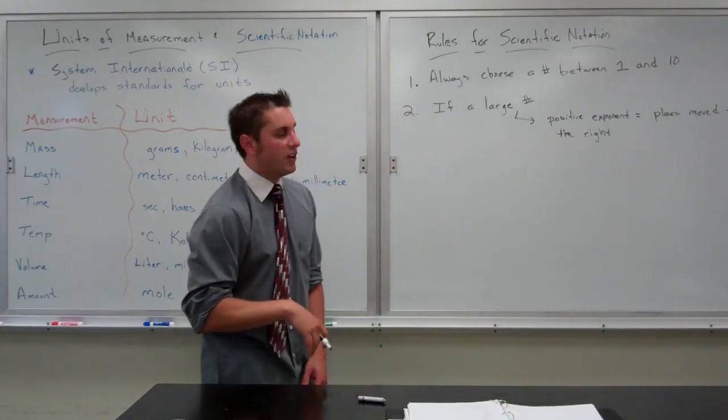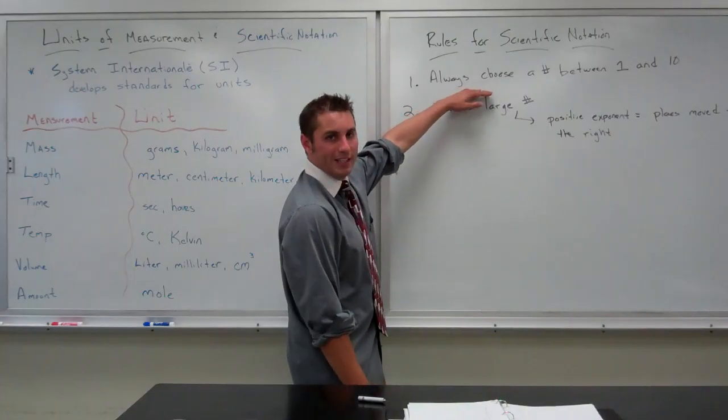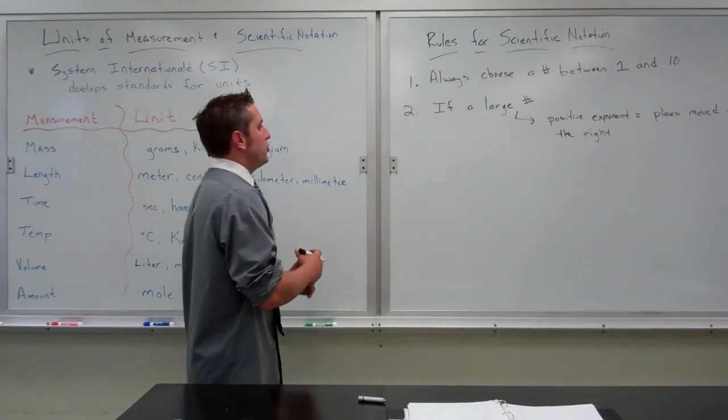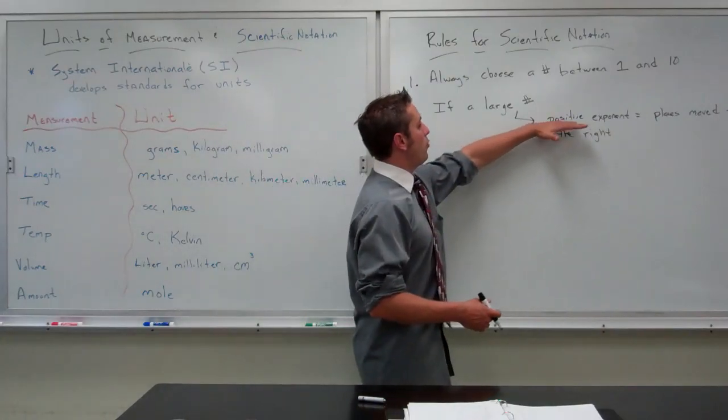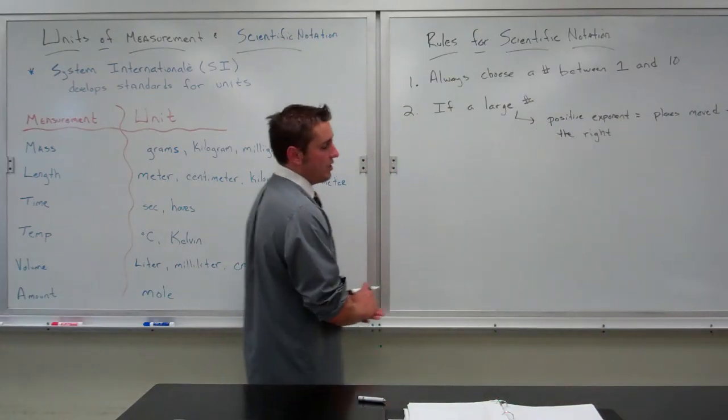If we're working with a very large number, we put our decimal point in that gives us a number between 1 and 10, and then we move as many places to the right as we need to to get to the end of that number, and we will say times 10 to the positive, whatever the number of places that we moved.